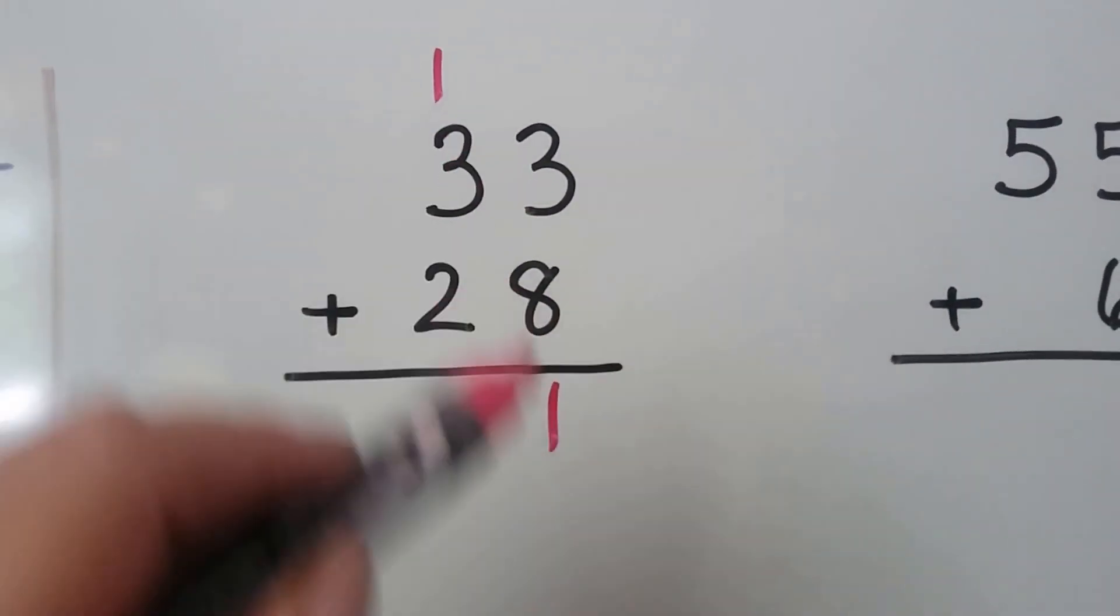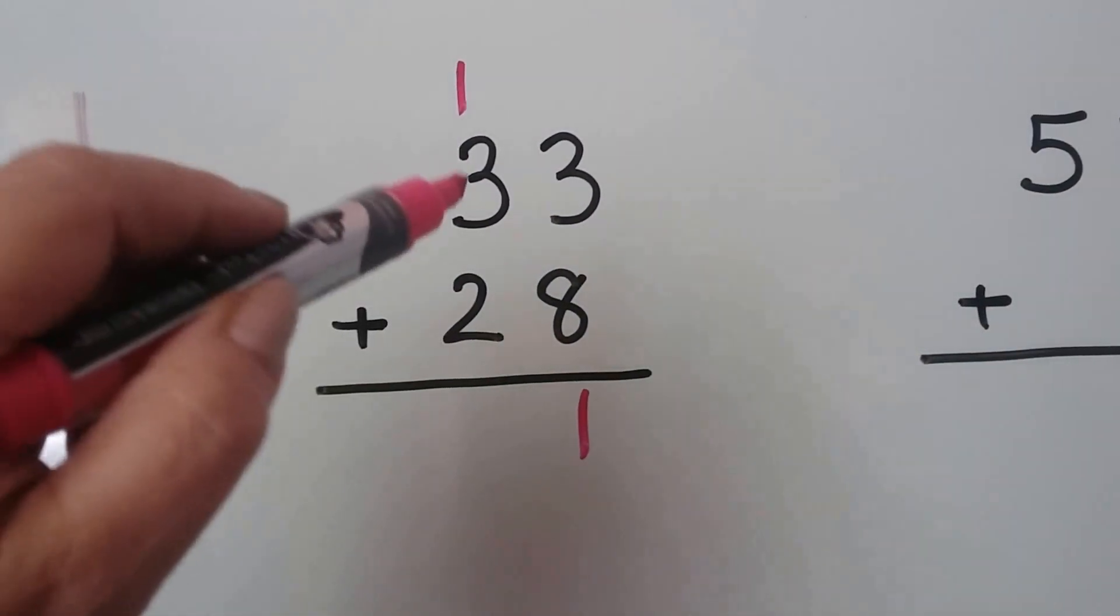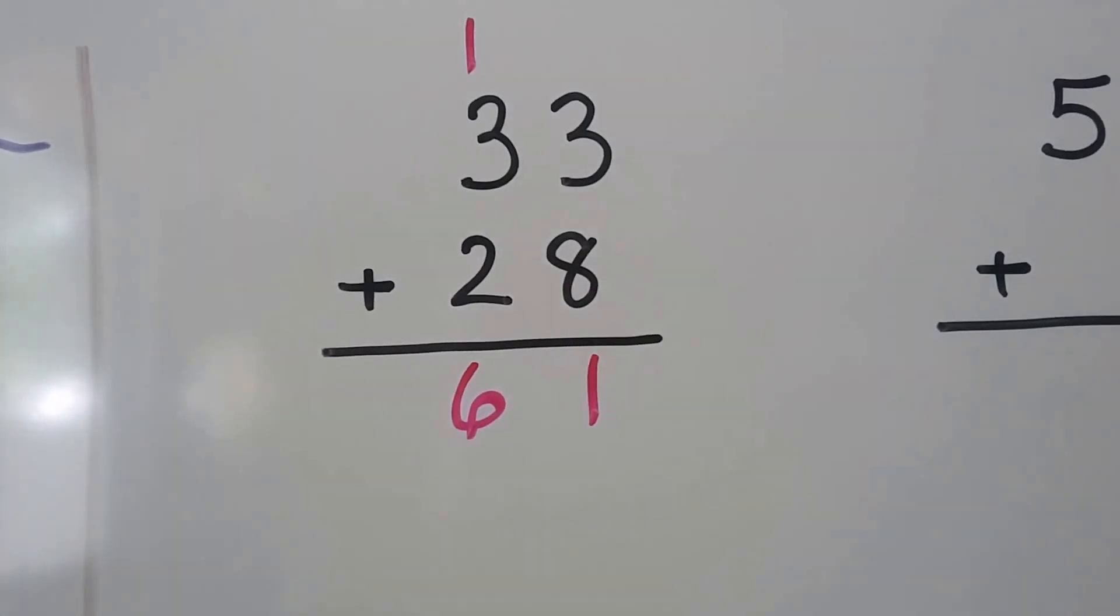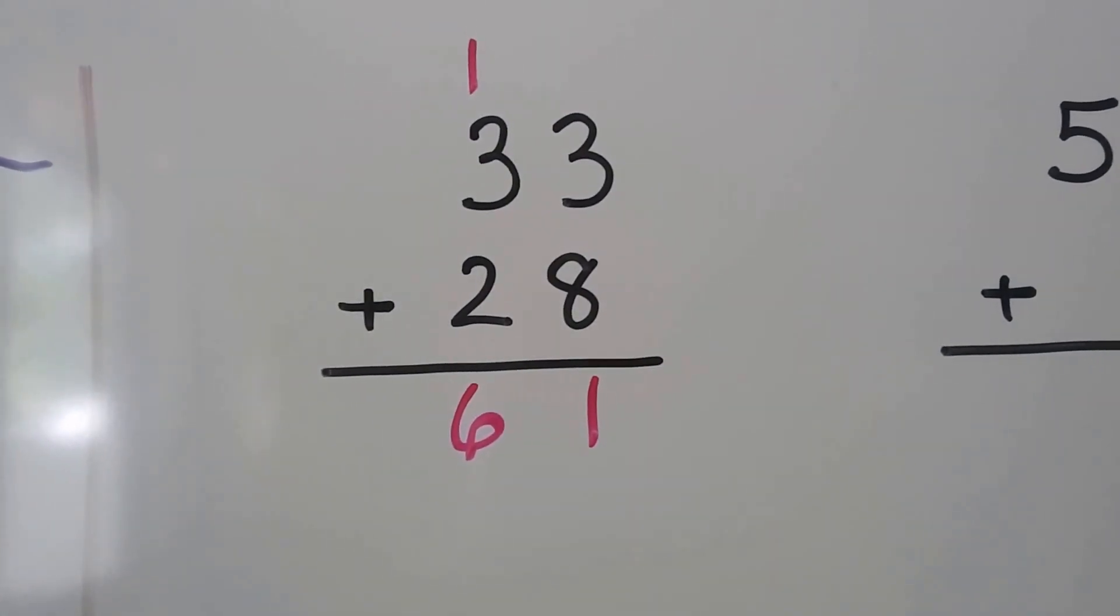See? 1, 10 and 1, 1. Now we add the tens place: 3, 4, 5, 6. 33 plus 28 equals 61.